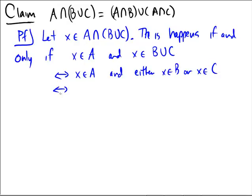So when would that happen? Well, that would only happen if x was in A and at the same time x was in B. Or, on the other hand, we knew x was in A no matter what. So we'd have x being in A and x being in C.